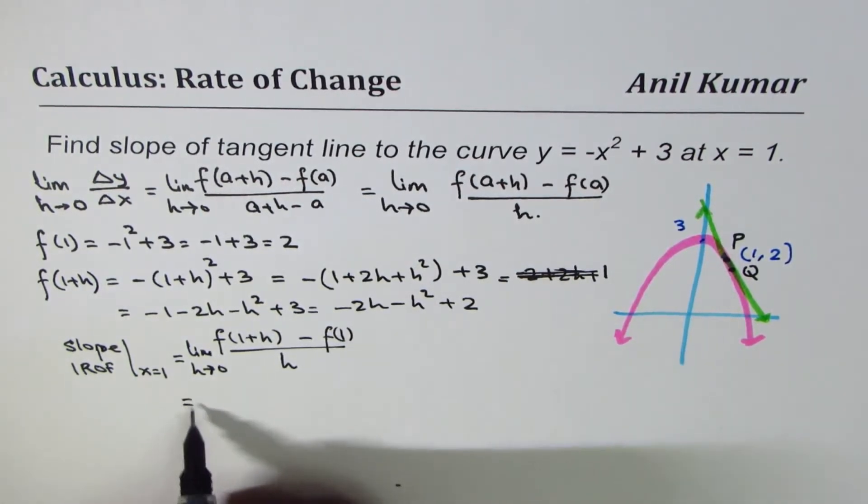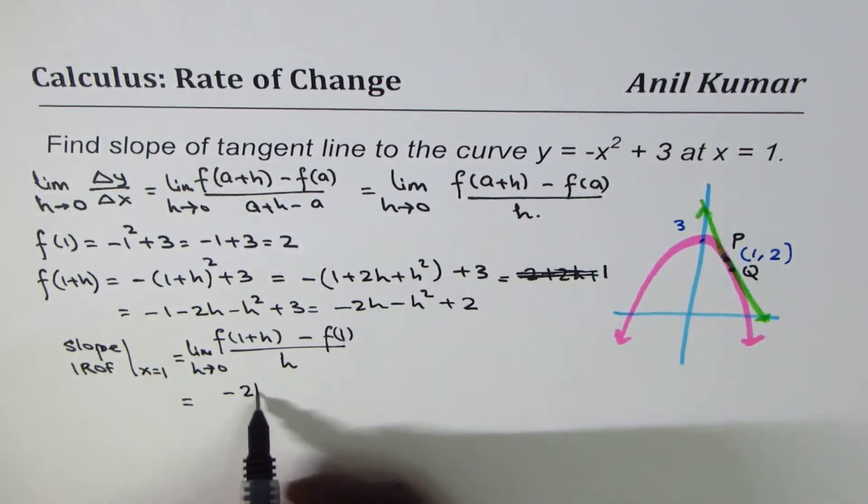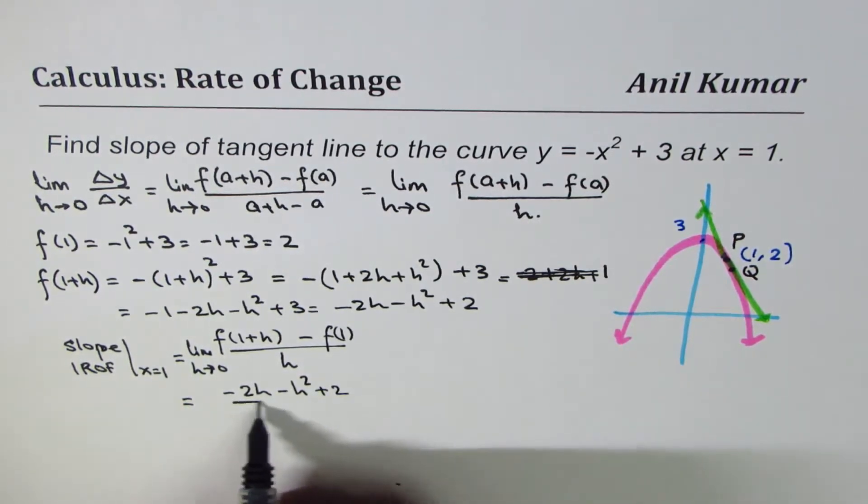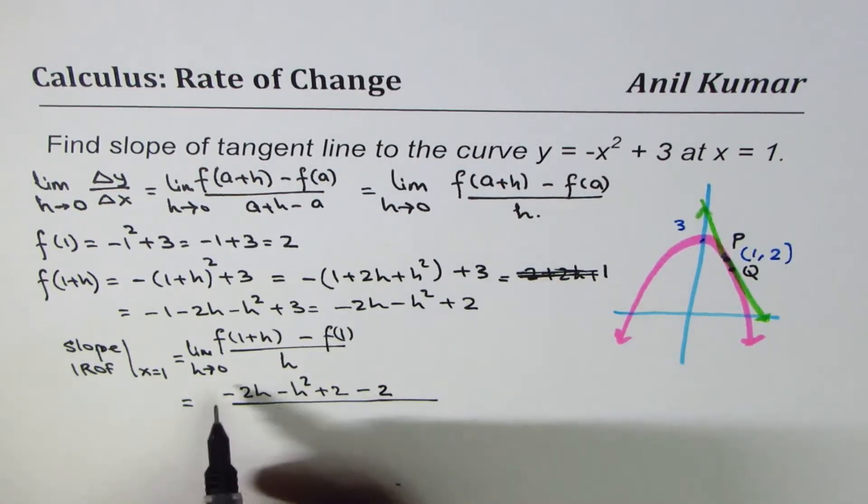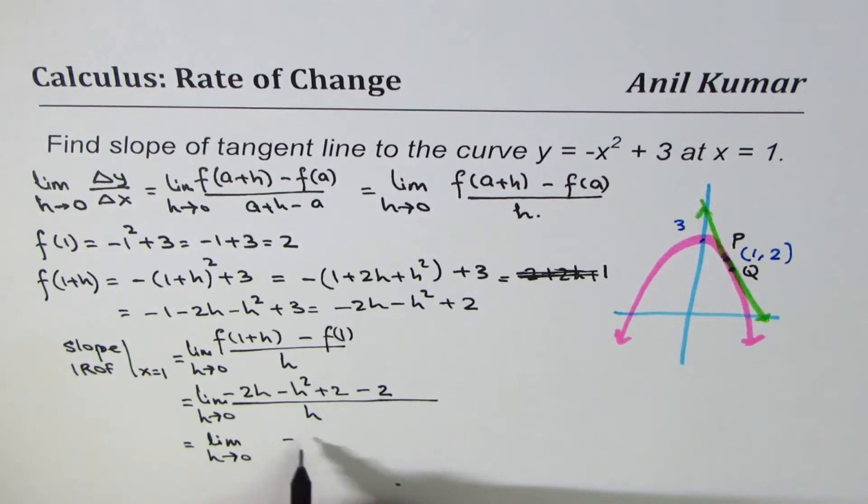So the expression which we have here is f(1 + h) is -2h - h² + 2 minus f(1), which is 2. And we have the limit h approaches 0 divided by h. Now, here +2 - 2 cancel. So what we get here is lim(h→0) (-2h - h²) / h.